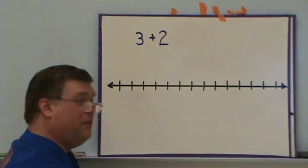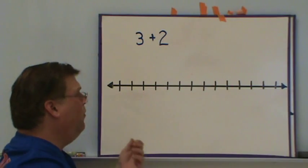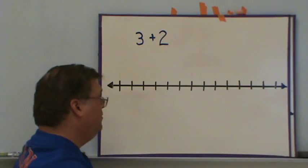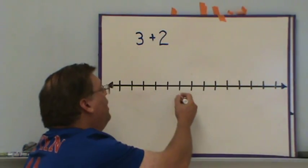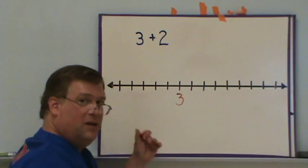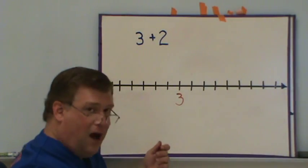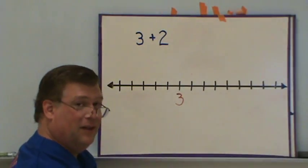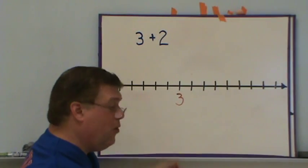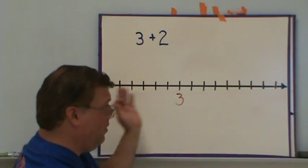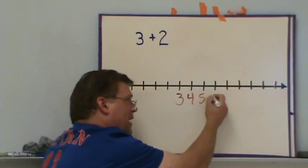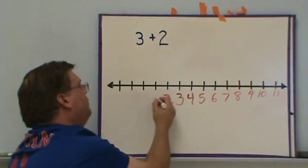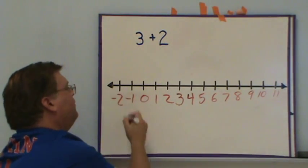Here we have a simple addition problem: three plus two. We know that three plus two is five. But if you're asked to model it on a number line, you've got to put numbers on the number line. I require a minimum of two lines to the right, two lines to the left, labeled appropriately. The problem starts with a three, so we label from negative two up through eleven. When representing an addition or subtraction problem on a number line, that first number is your starting point.